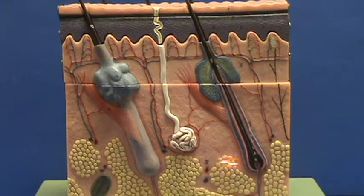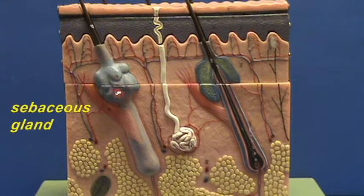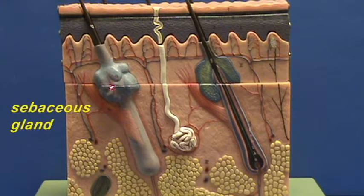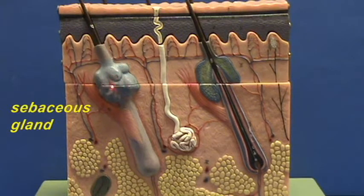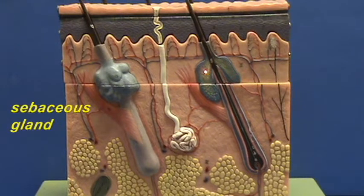You can see the sebaceous gland represented right over here. You can see its association with the hair follicle. Right over here, it's shown in three dimensions in relief. Here you can see it in section, and so here is a two-dimensional view of the same gland.